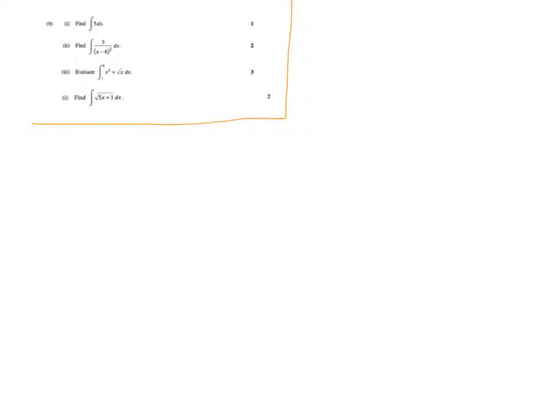So first one there, oh by the way ignore the fact that it goes one, two, three, one, they're just from different exam papers. Number one here is the primitive of 5dx, very very simple, one line, 5x, of course add that constant. 5 is the derivative function of this, 5x plus c, okay.